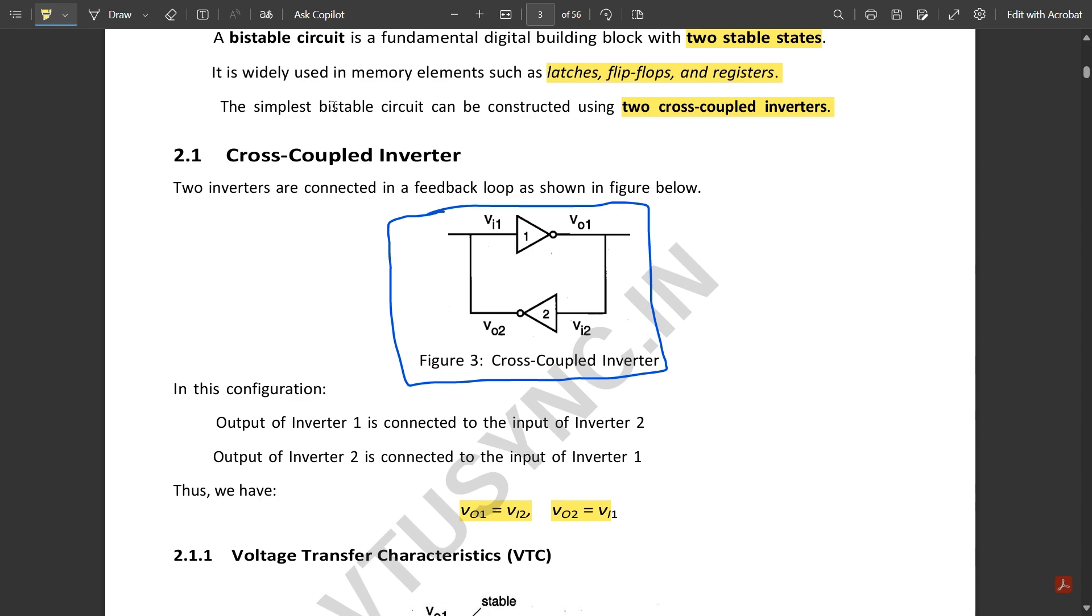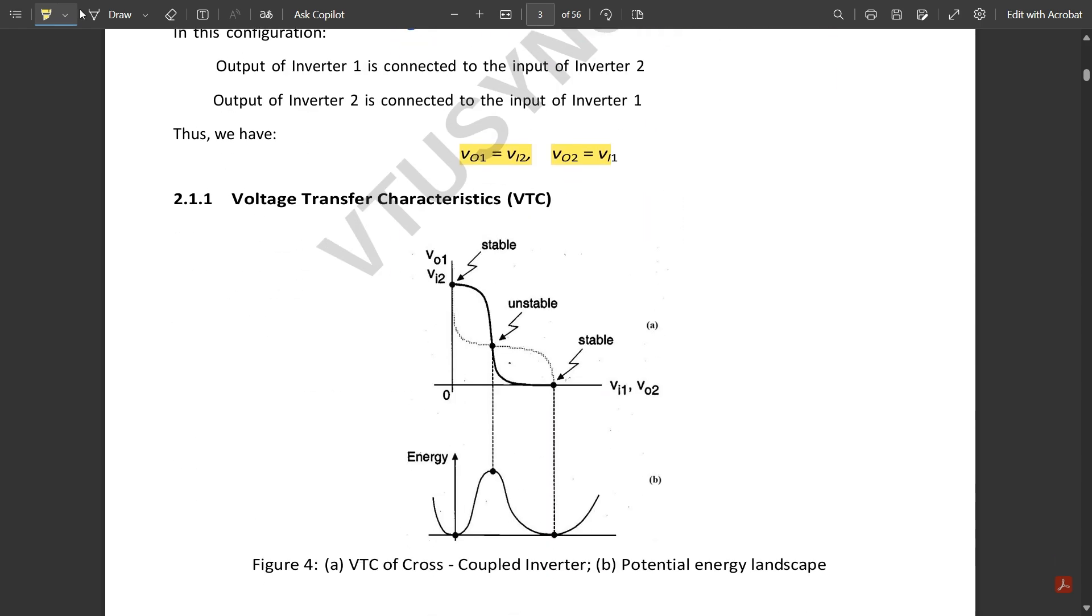Next, the voltage transfer characteristics of this cross-coupled inverter. This graph is shown here. Since we have two inverters with different operations, this curve is similar to the CMOS inverter DC characteristics.